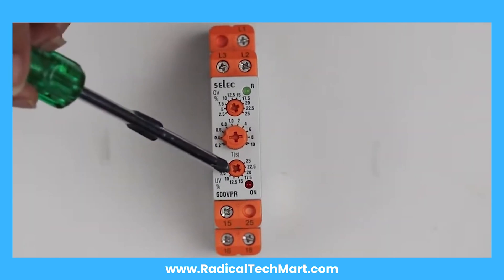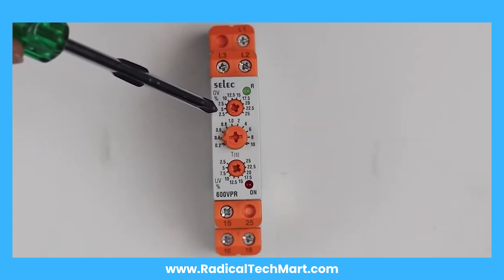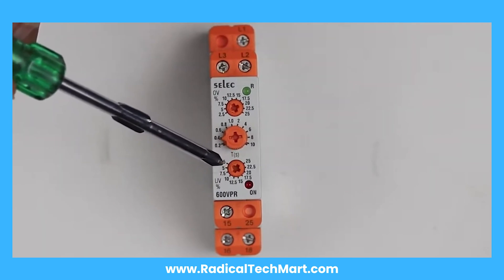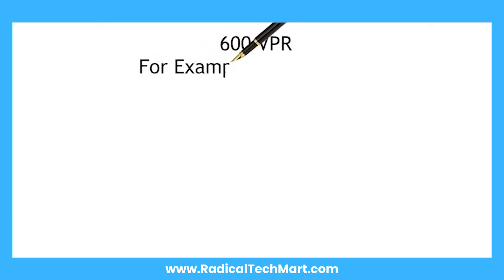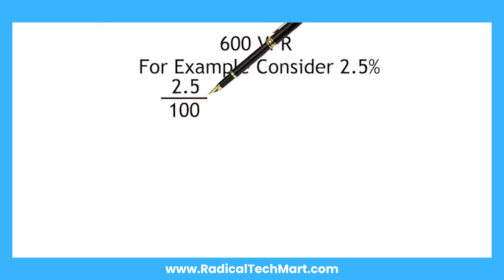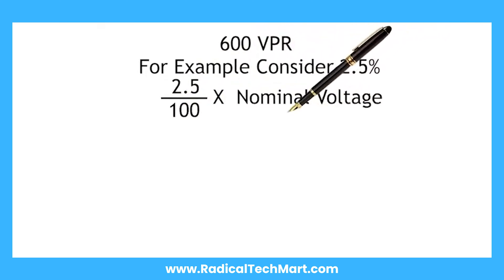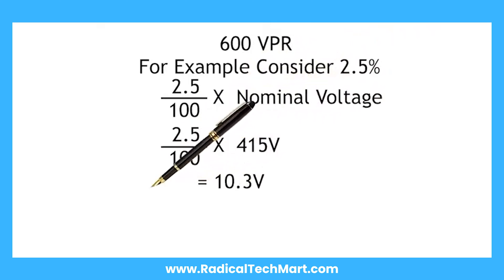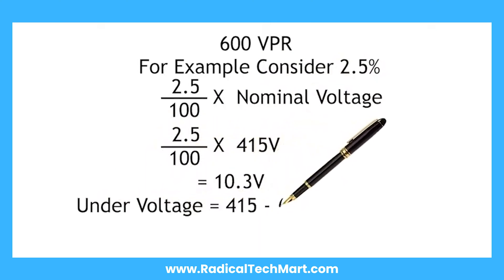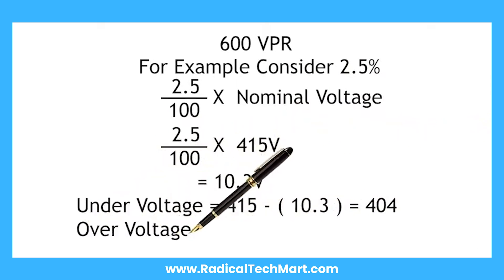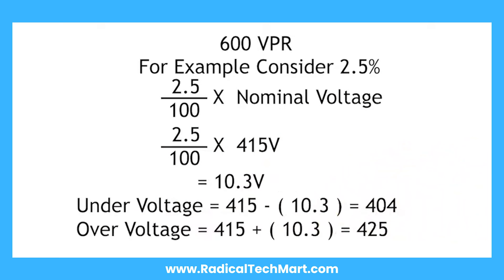Now let us learn about how to do the setting for over voltage and under voltage. You can set the over voltage and under voltage percentages from 2.5% to 25%. Here is the formula: the value 2.5 is divided by 100, then multiplied by the nominal voltage. The nominal voltage of the product is 415V, so 2.5 divided by 100 into 415 equals 10.3. For under voltage, you do 415 minus 10.3, which is 404V. For over voltage, 415 plus 10.3, which is 425V.